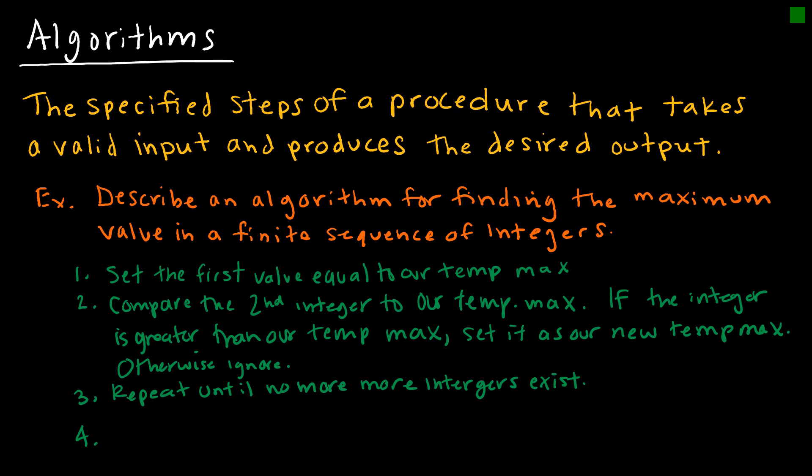So our last step is basically just telling us how do we know what the maximum is. So when the process is over, when the algorithm terminates, and it terminates again when we run out of numbers, the temporary max is the maximum integer. So this is an example of an algorithm that finds the maximum value in a finite sequence of integers. Obviously, there is no value if it's an infinite sequence of integers.